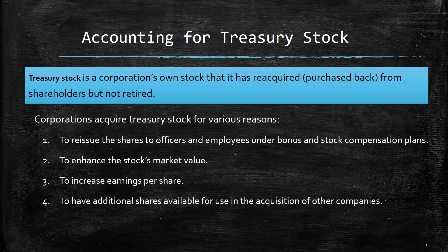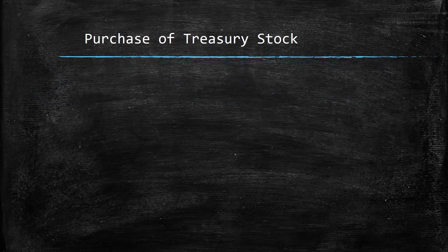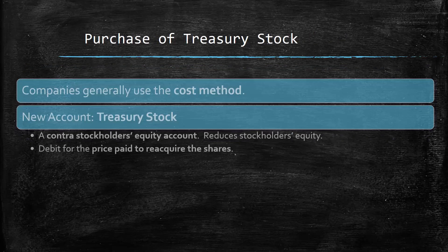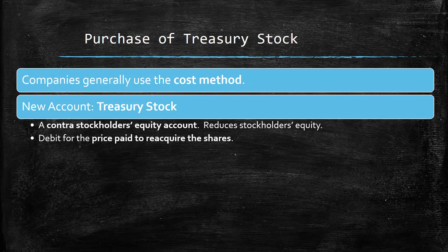Lastly, another reason could be that the corporation needs those shares in order to use them as part of the acquisition of another company. But whatever the reason, the purchase of treasury stock, the accounting is pretty much the same. Companies generally use the cost method when they are recording the purchases of treasury stock. When they're buying that stock, it goes into a new account called treasury stock. That account is a contra stockholders' equity account, which means it's in the stockholders' equity section of the balance sheet, but it reduces overall stockholders' equity because it has a debit normal balance. We debit the account for the price that they pay to buy those shares back from the market.